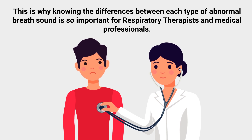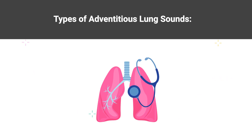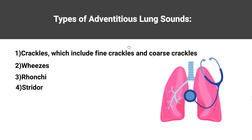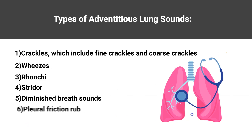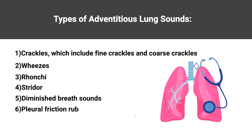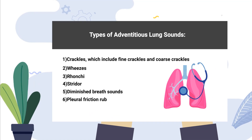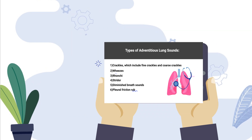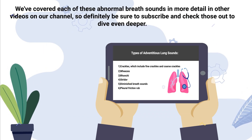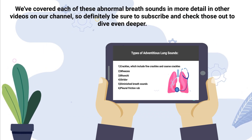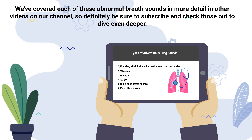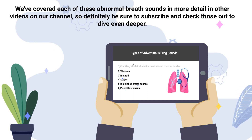The types of adventitious lung sounds include crackles, which include fine crackles and coarse crackles, wheezes, ronchi, stridor, diminished breath sounds, and a pleural friction rub. We've covered each of these abnormal breath sounds in more detail in other videos on our channel, so definitely be sure to subscribe and check those out to dive even deeper.